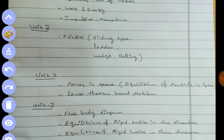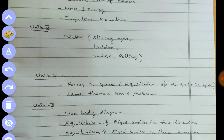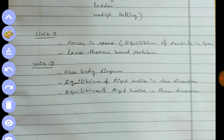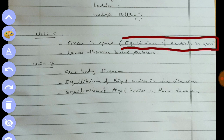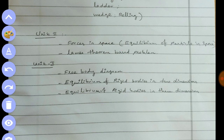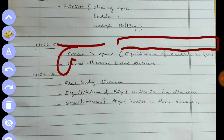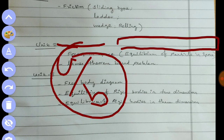Unit 5 topics include friction, ladder type, wedge, and rolling. Unit 5 also covers particle in space and forces in space. Last year, parts A and B covered space topics.